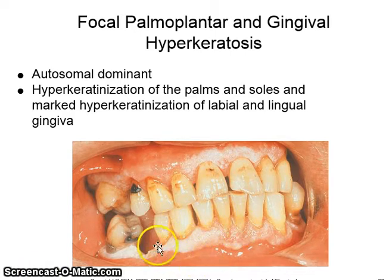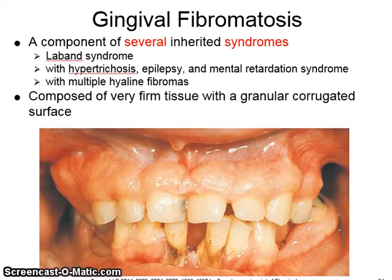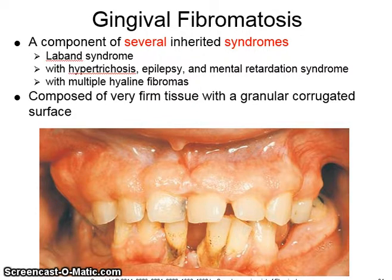Notice the white appearance of the hyperkeratinized tissue. Gingival fibromatosis is a component of several inherited syndromes, including Laban syndrome, and is composed of very firm tissue with a granular and corrugated surface.